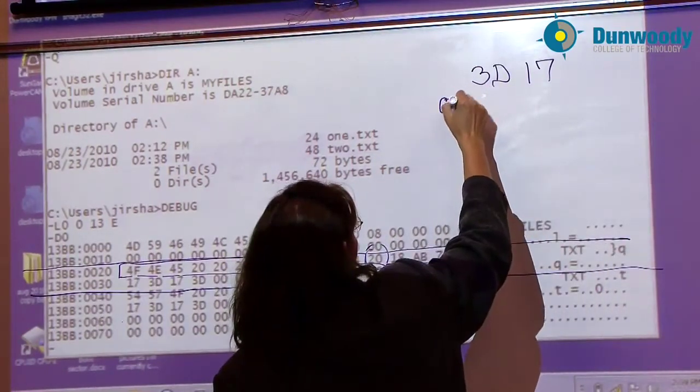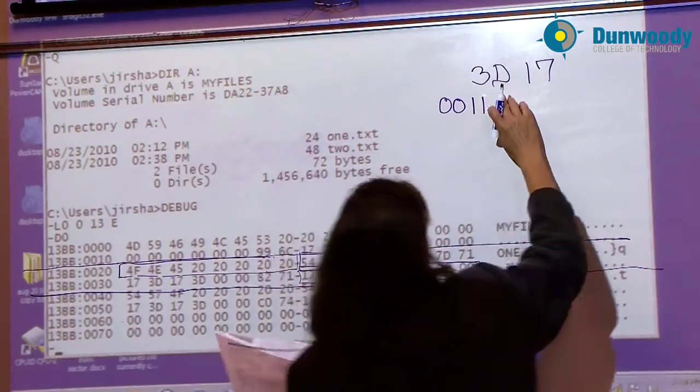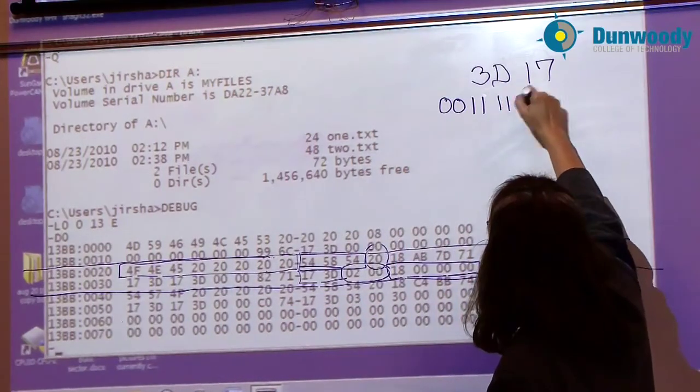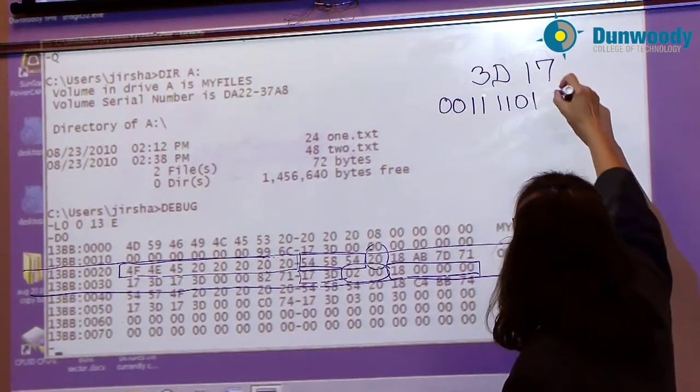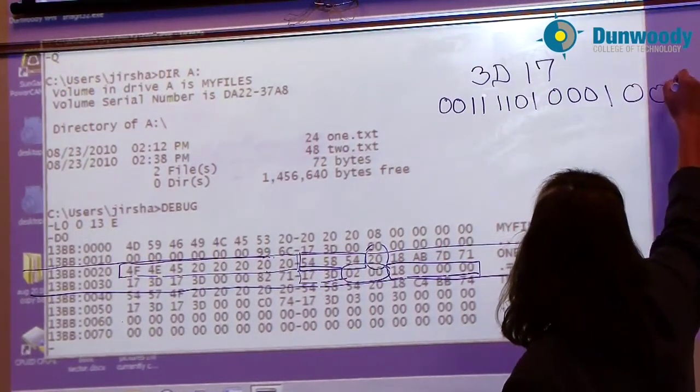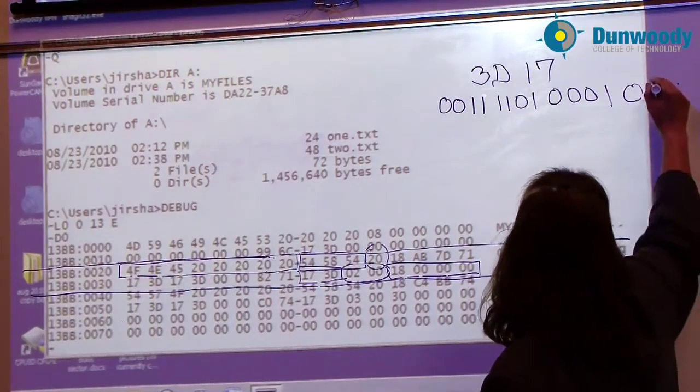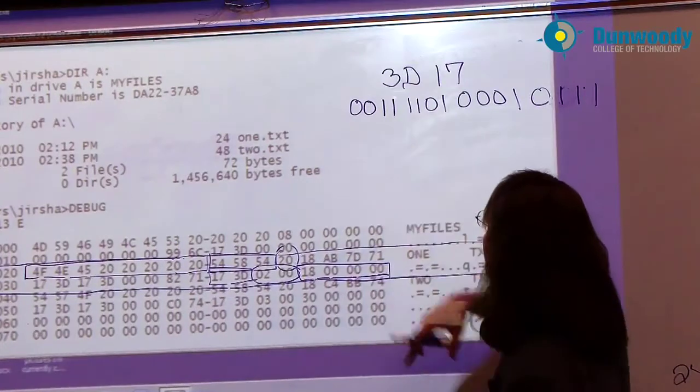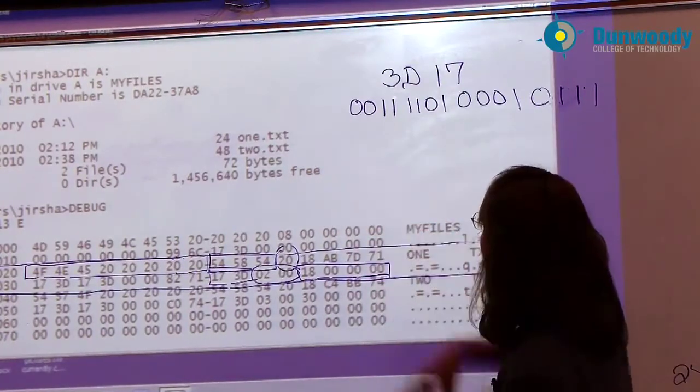3 is converted to 0011. D is converted to 1101. 1 is converted to 0001. And 7 is 0111. I converted this 2 byte hex number into a 2 byte binary number.